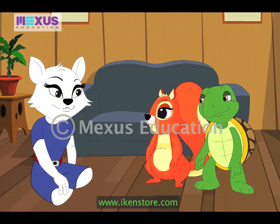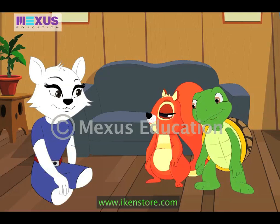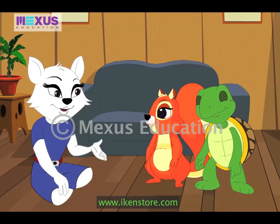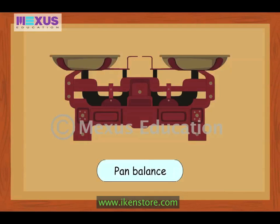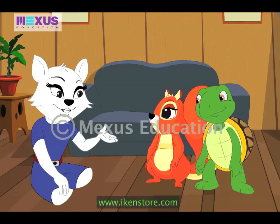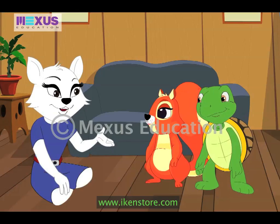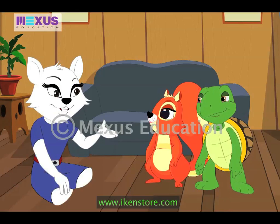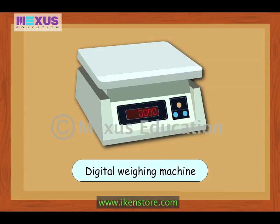Oh, really? What are they? In the grocery shop, you will usually find the pan balance. But nowadays, there are tools which do not use weights at all. One of them is a digital weighing machine. It shows the weight written on the screen. It gives the exact weight of objects.